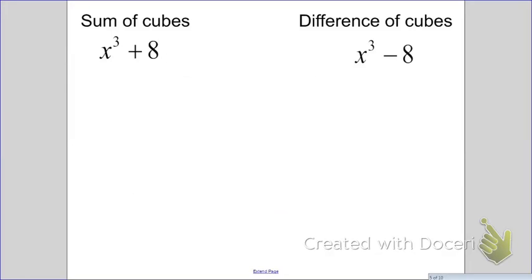First off, let's identify what A and B are. In the sum of cubes, A is equal to X. And the B is not equal to 8. It's what cubed makes 8. And what makes 8? 2 cubed makes 8. So, our B is 2. Now, we're doing the sum of cubes because I see a plus for sum.